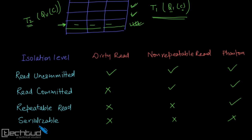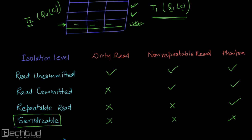Generally, that's why a scheduler enforces the serializable isolation level so that everything will be correct. In the next chapter we will learn how a scheduler enforces serializable. To enforce serializability, you need a mechanism so that the same data is not misused — for example, if a data item A is being read, nobody should write it, and when a write is being performed, another transaction is not allowed to write. Any kind of action which can cause a problem should be avoided.